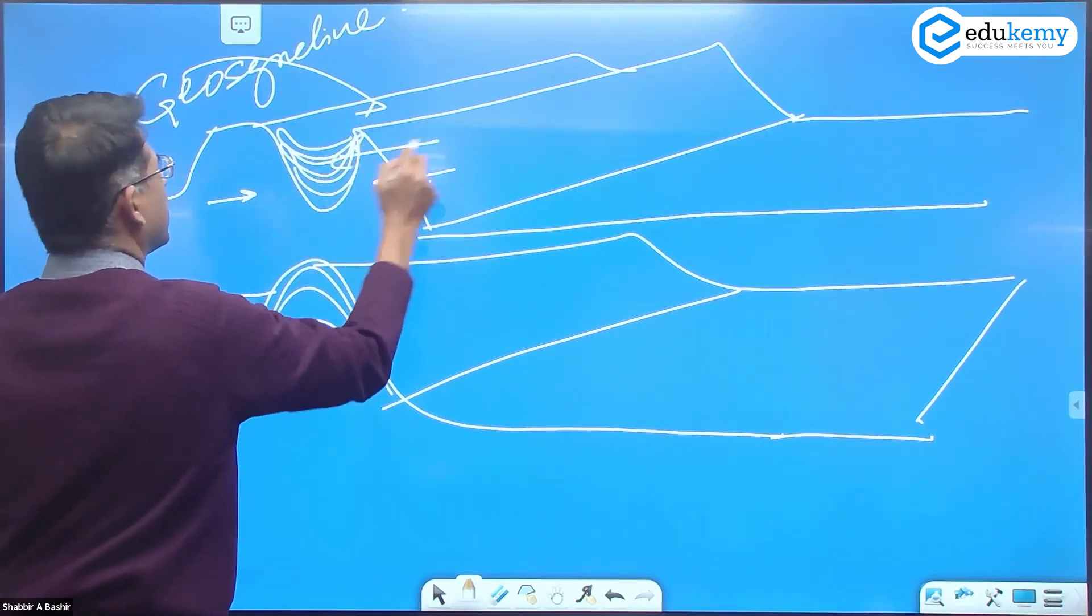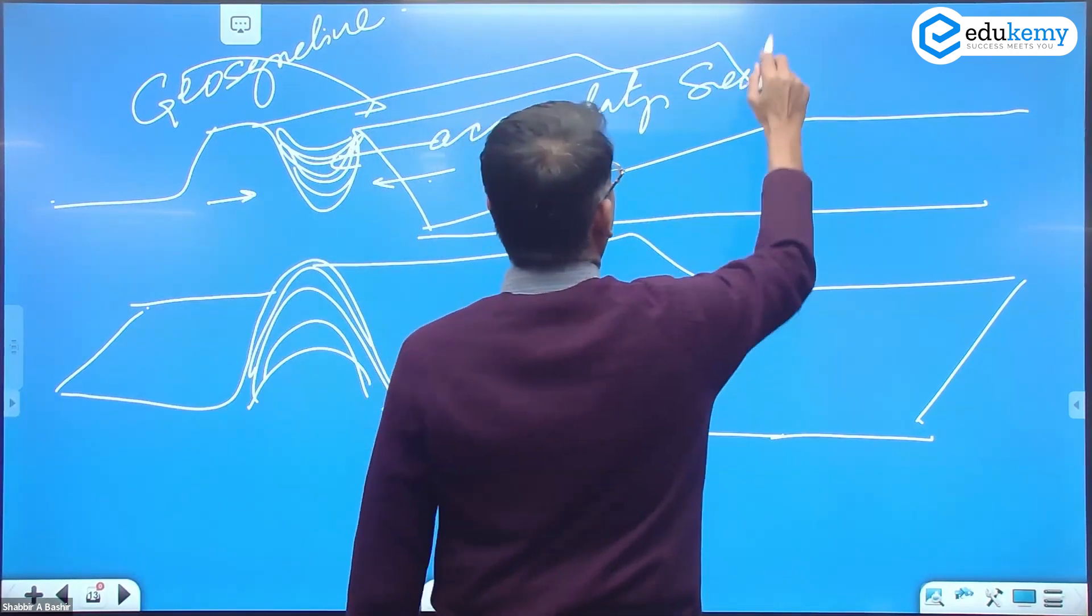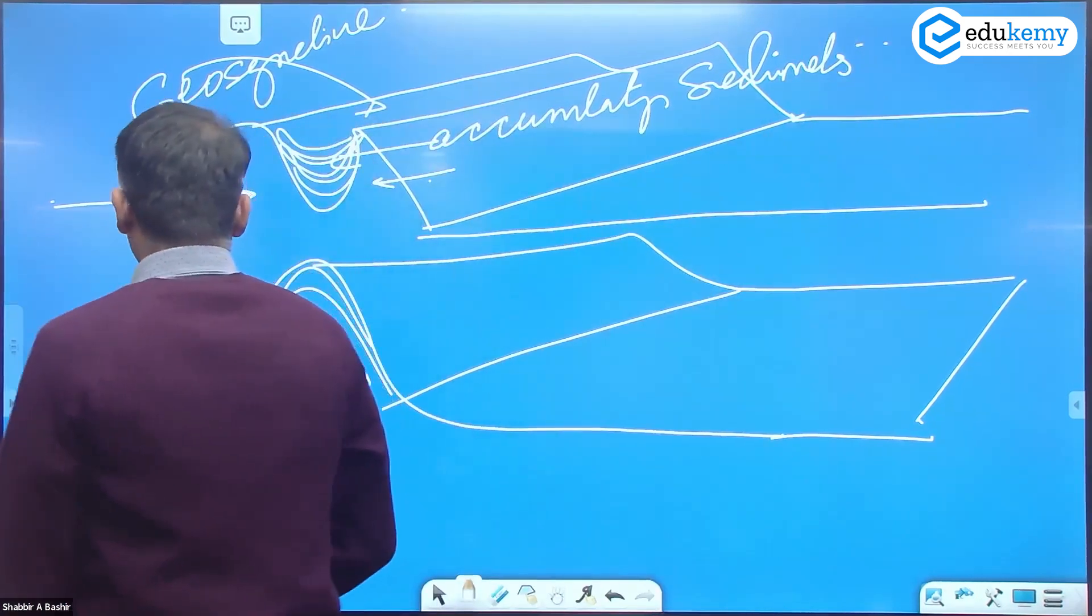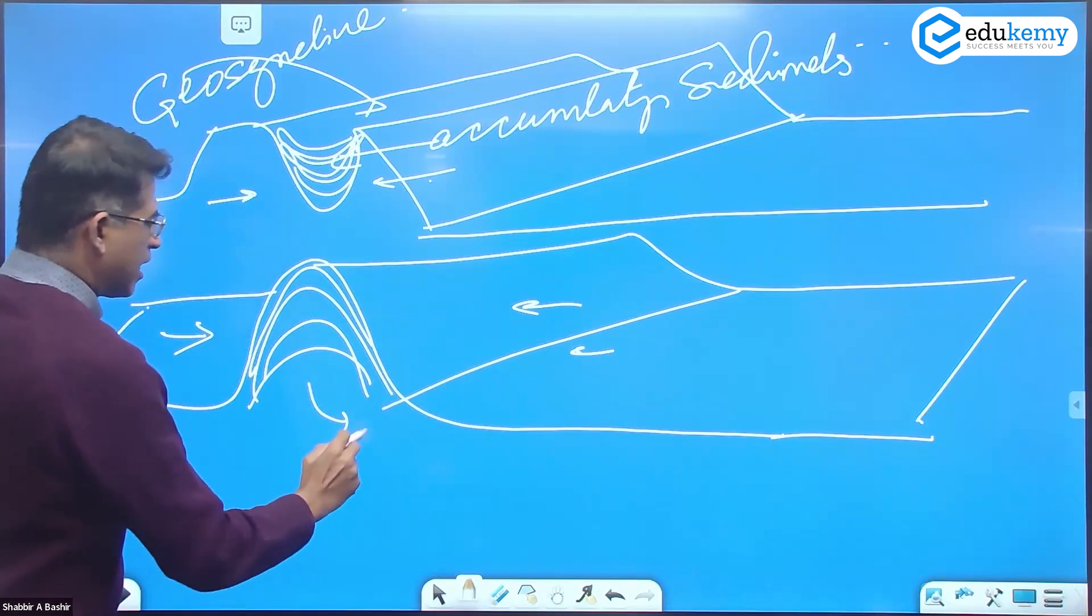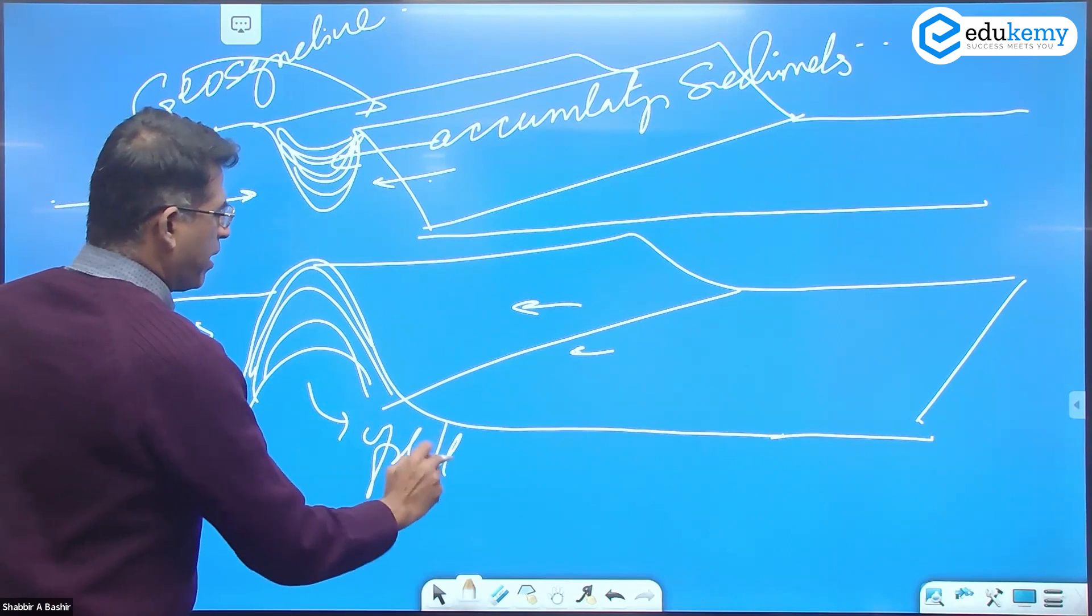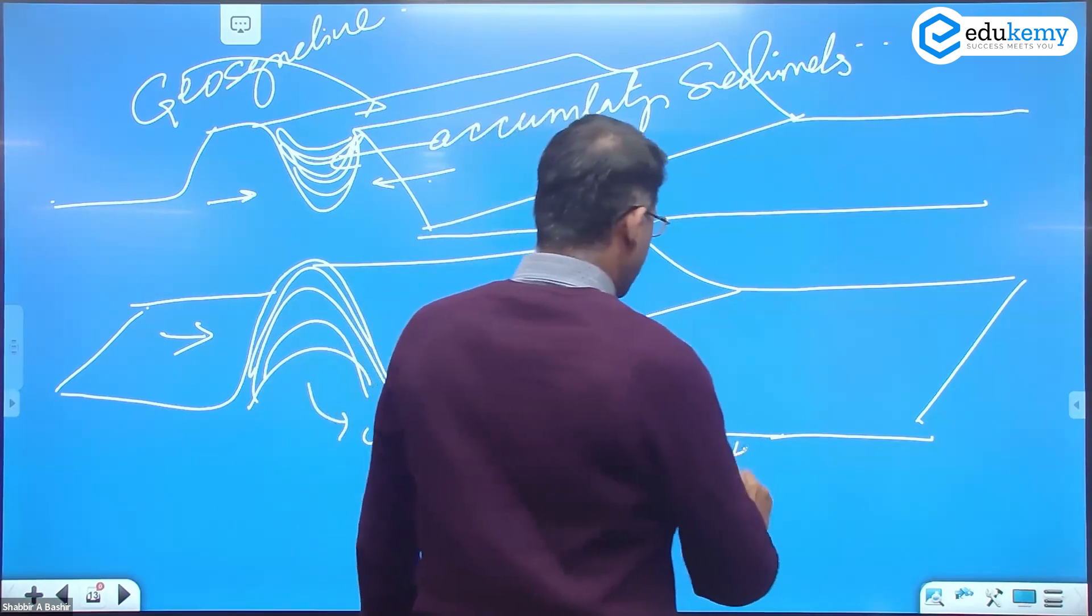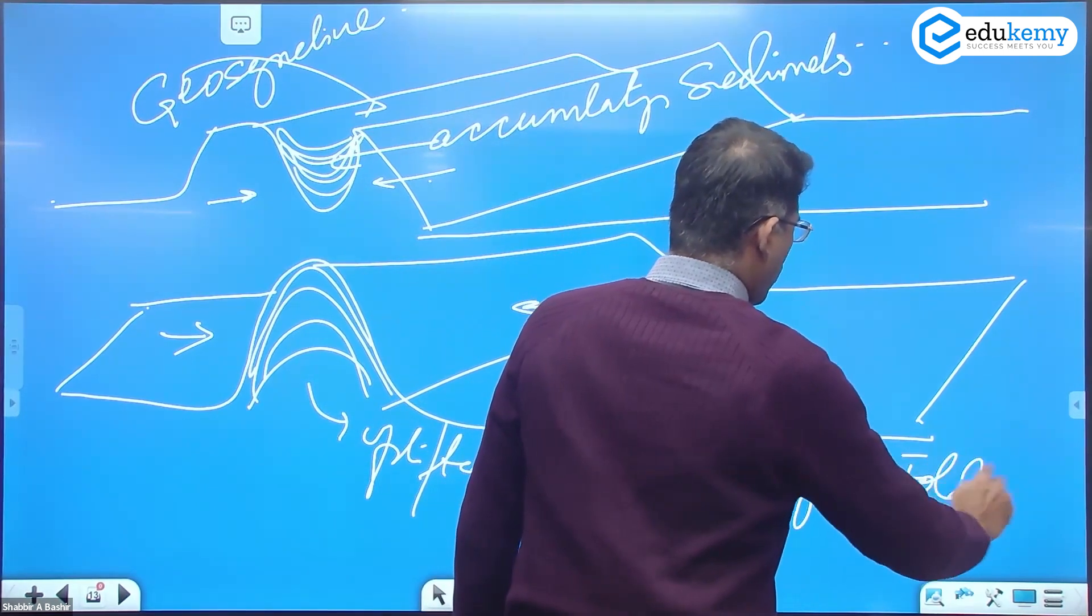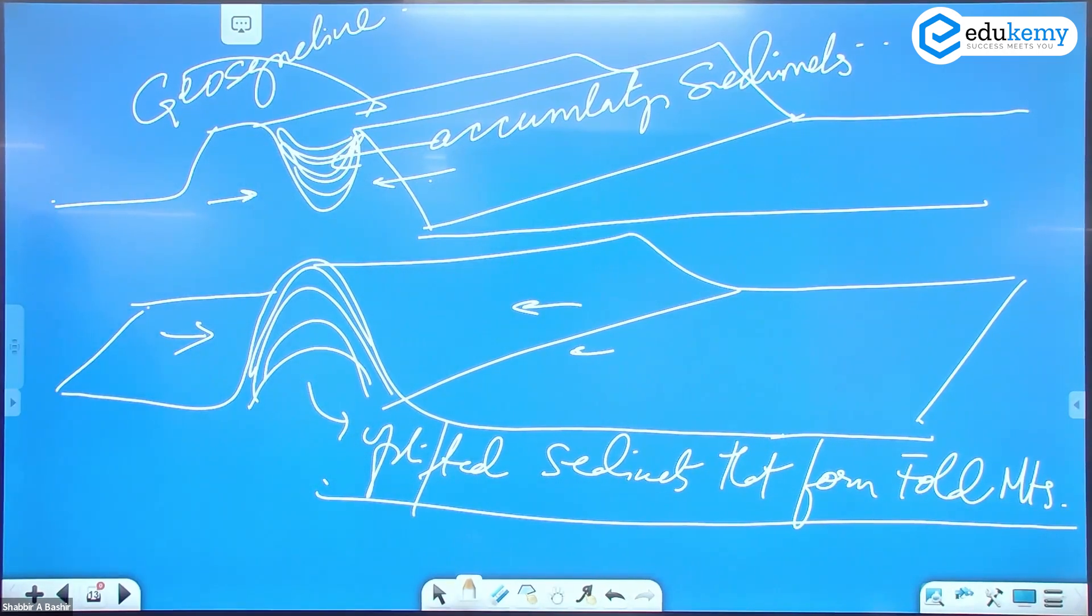These are the accumulating sediments. And for whatever reason, if there is some compression, these are the uplifted sediments that form the fold mountains. The uplifted sediments that form the fold mountains.